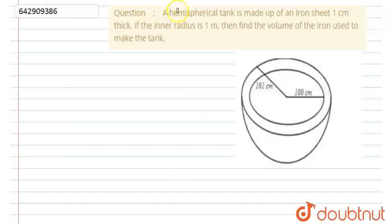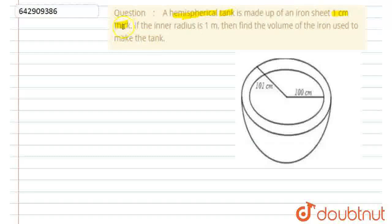Hello everyone! I have a question for you. A hemispherical tank is made up of an iron sheet 1 cm thick. If the inner radius is 1 meter, then find the volume of iron used to make the tank.